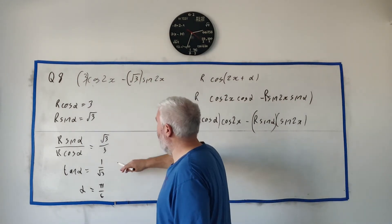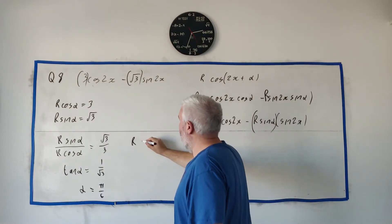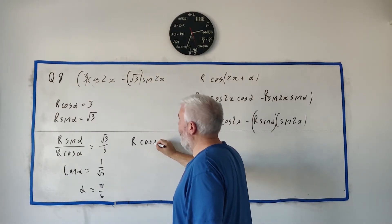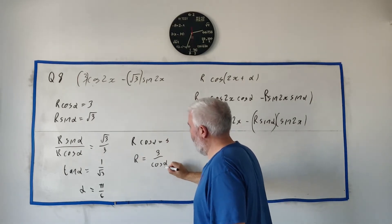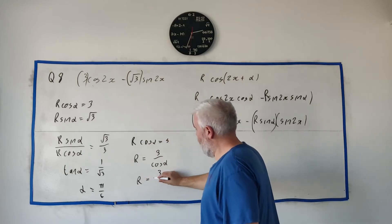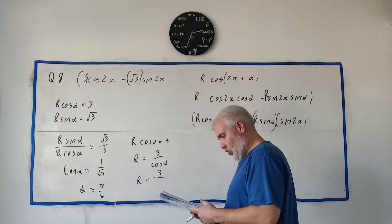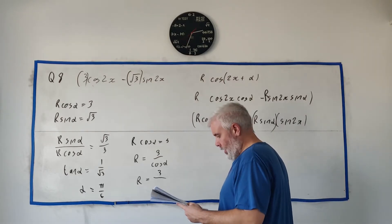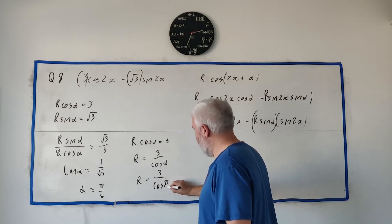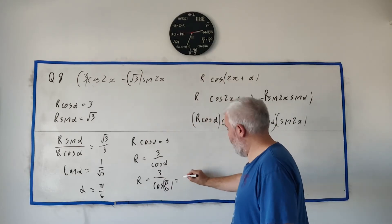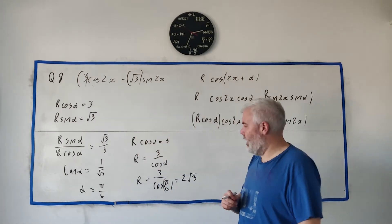Now we just need r. Substituting into r·cosine(α) = 3, we get r = 3 over cosine(α), which is 3 over cosine(π/6). Putting that into the calculator gives r = 2√3. That's the answer for part A.